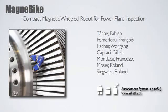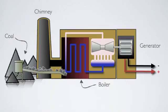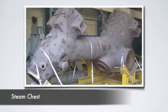Developed at the Autonomous Systems Lab at ETH Zurich, the Magnebike robot has been designed to carry inspection sensors into power plants, especially in the steam chests.